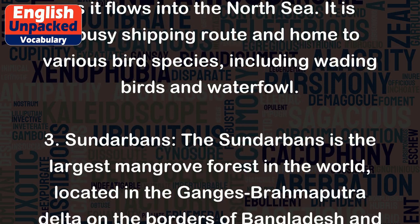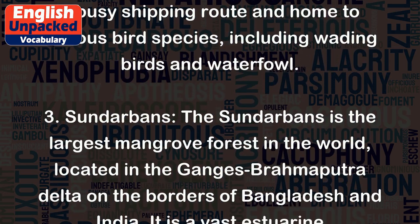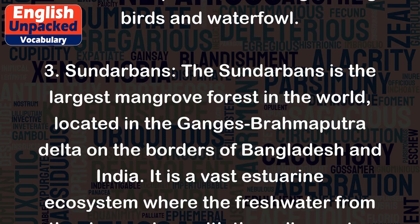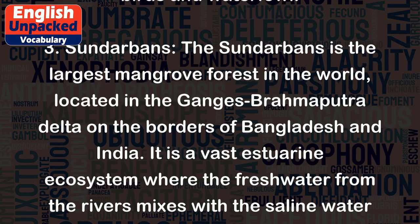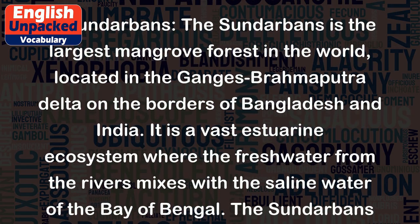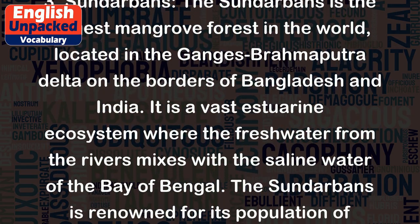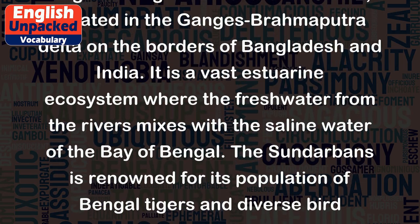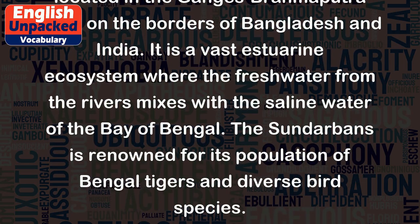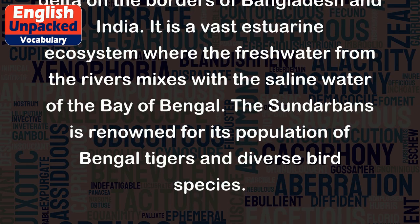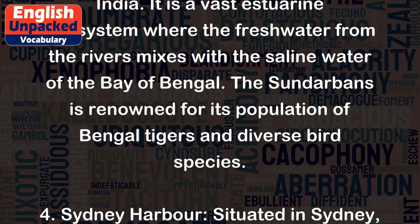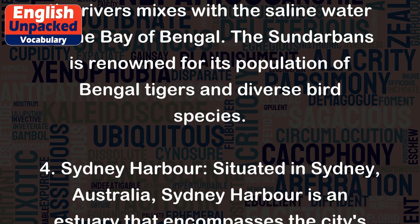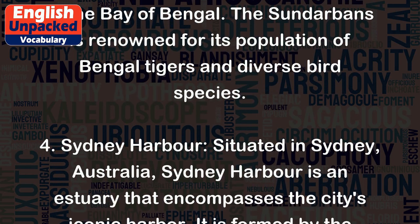3. Sundarbans — the Sundarbans is the largest mangrove forest in the world, located in the Ganges-Brahmaputra Delta on the borders of Bangladesh and India. It is a vast estuarine ecosystem where the freshwater from the rivers mixes with the saline water of the Bay of Bengal. The Sundarbans is renowned for its population of Bengal tigers and diverse bird species.